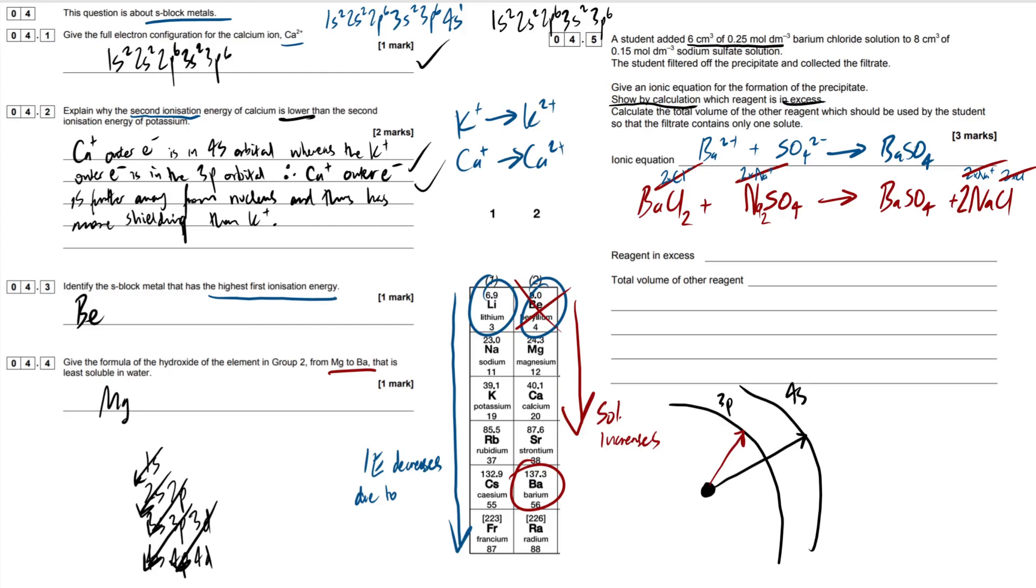So reagent in excess. This is where we have to do some sort of calculation. So what I'm going to do is I'm going to use this space for our calculations and then answer the questions after. Whenever you see two variables given like this, this is a volume, this is a concentration. The first thing you should think straight away is molar equation. Our molar equation is simply N equals CV. Learn this off by heart. It's in all the equations you need to know for amount of substance calculations.